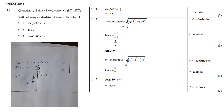5.1.3: cos(180 + x). We remember this identity: 180 + x takes you into the third quadrant, and in the third quadrant cosine is negative. Therefore, cos(180 + x) = −cos x.